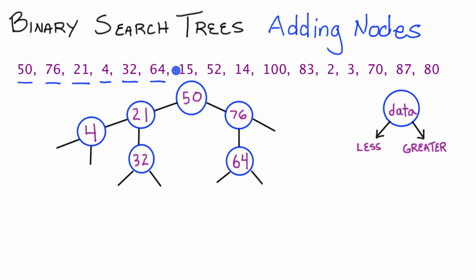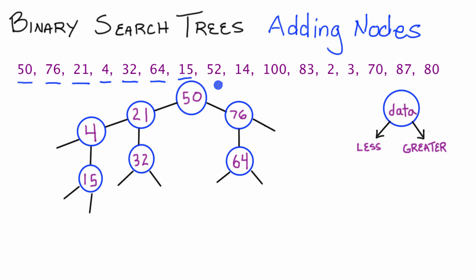Next we want to add 15. Starting at 50, 15 is less than 50, so we go down the left pointer. 15 is less than 21, so we go down the left pointer again. Finally, 15 is greater than 4, so we place node 15 there. So now we've placed node 15 in the tree.